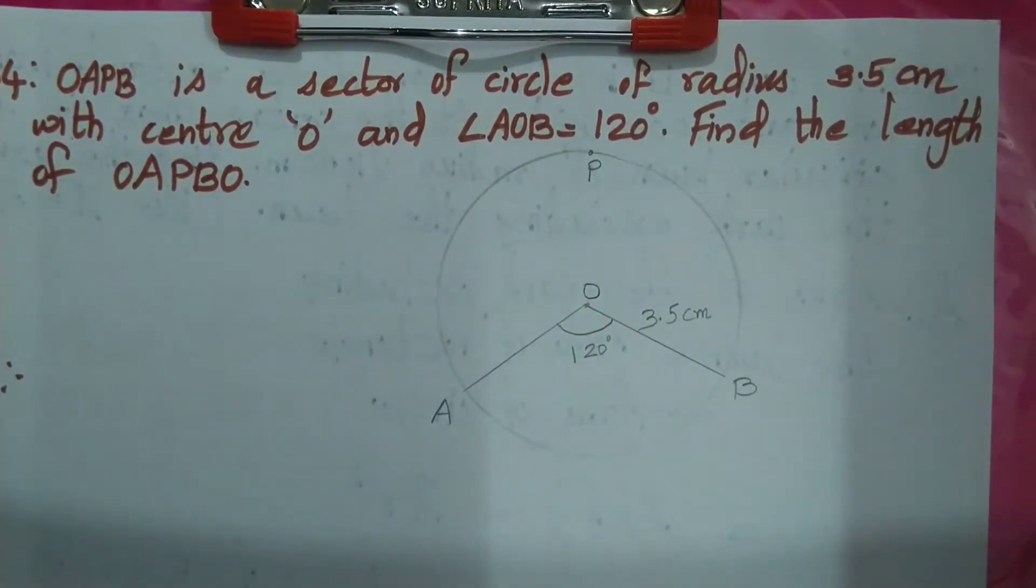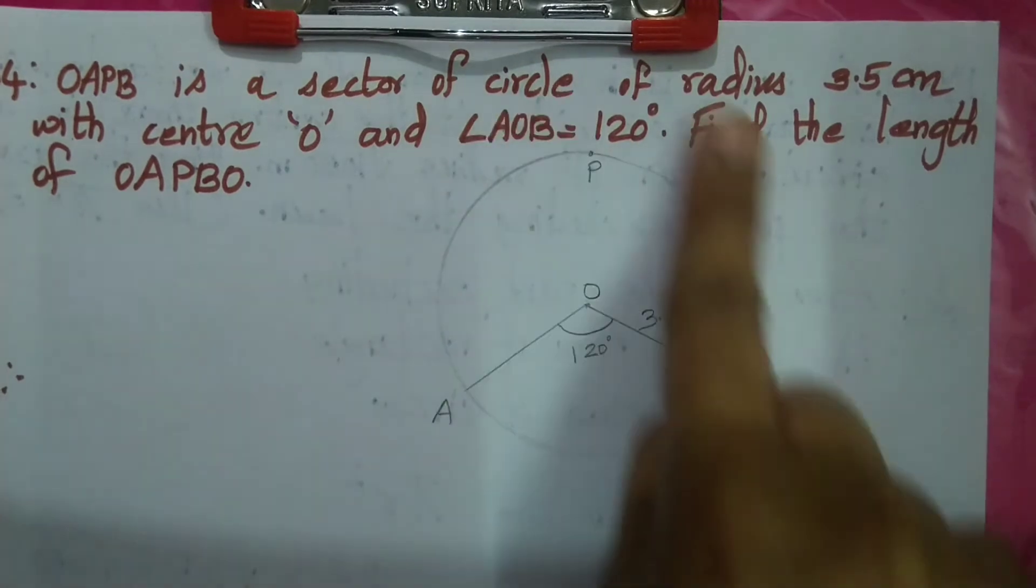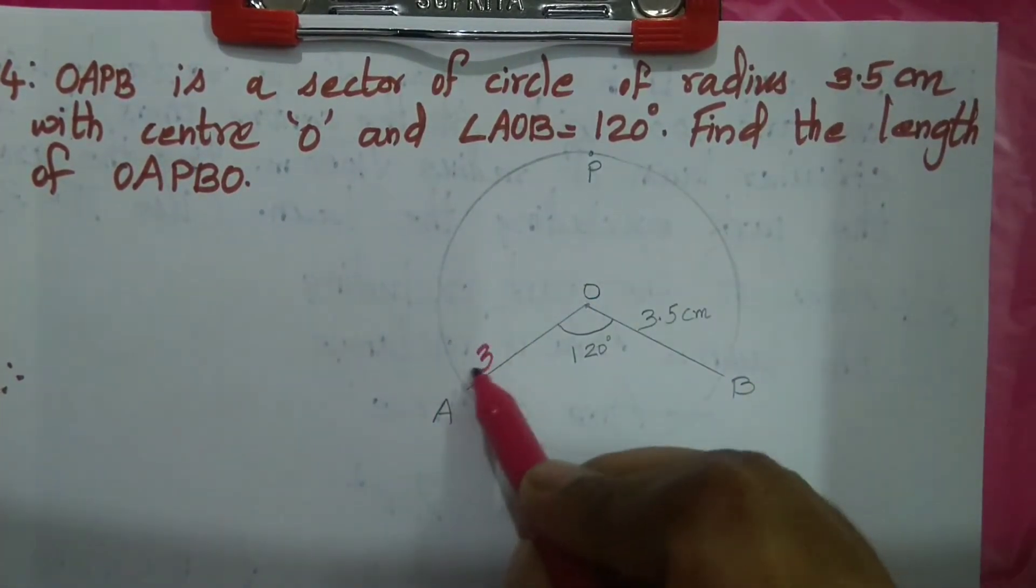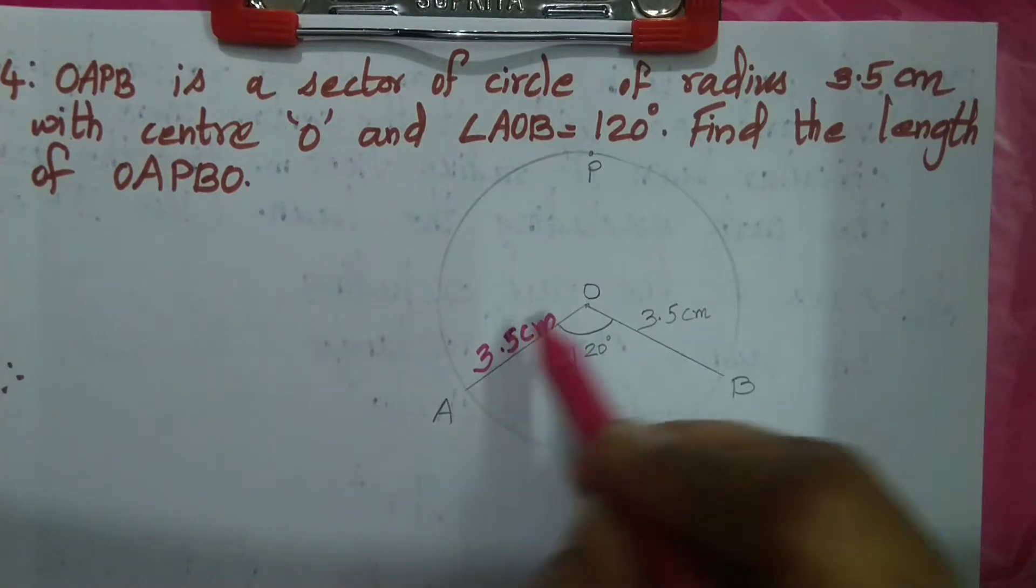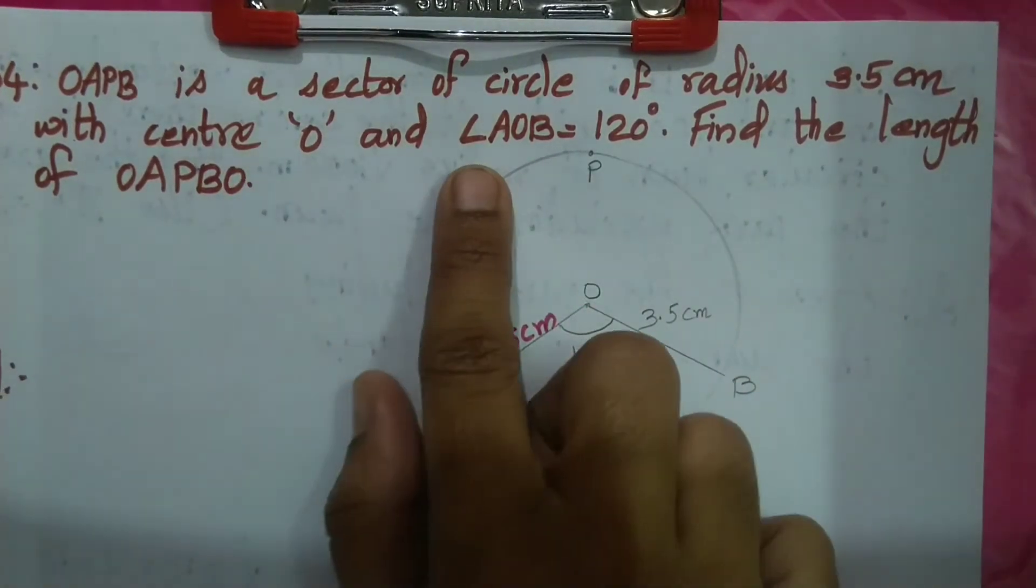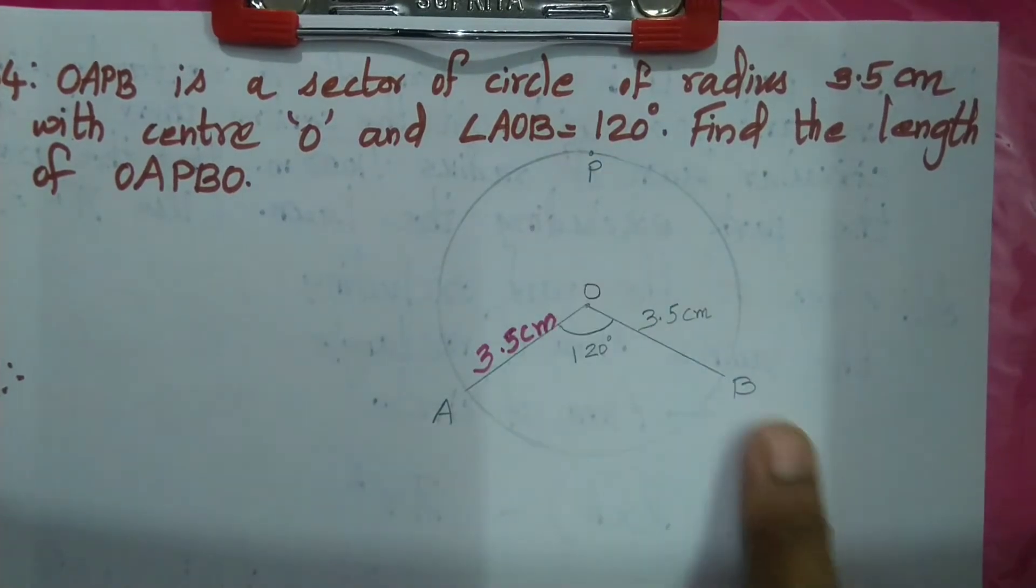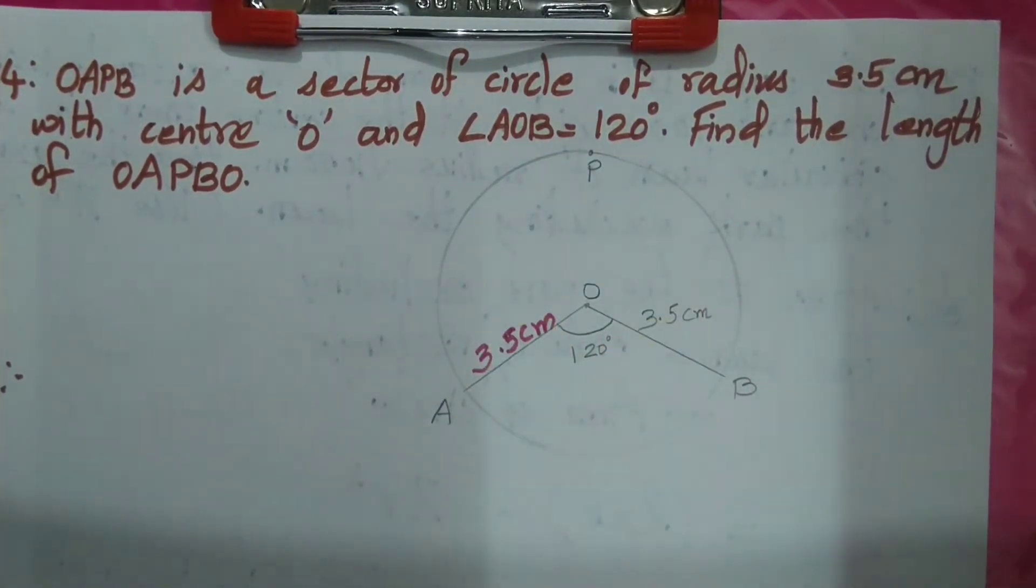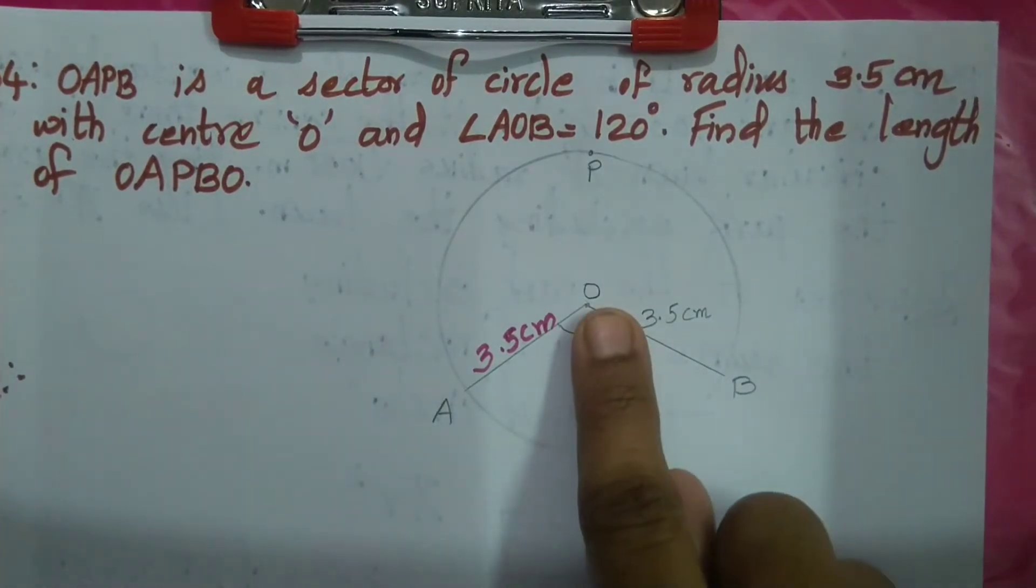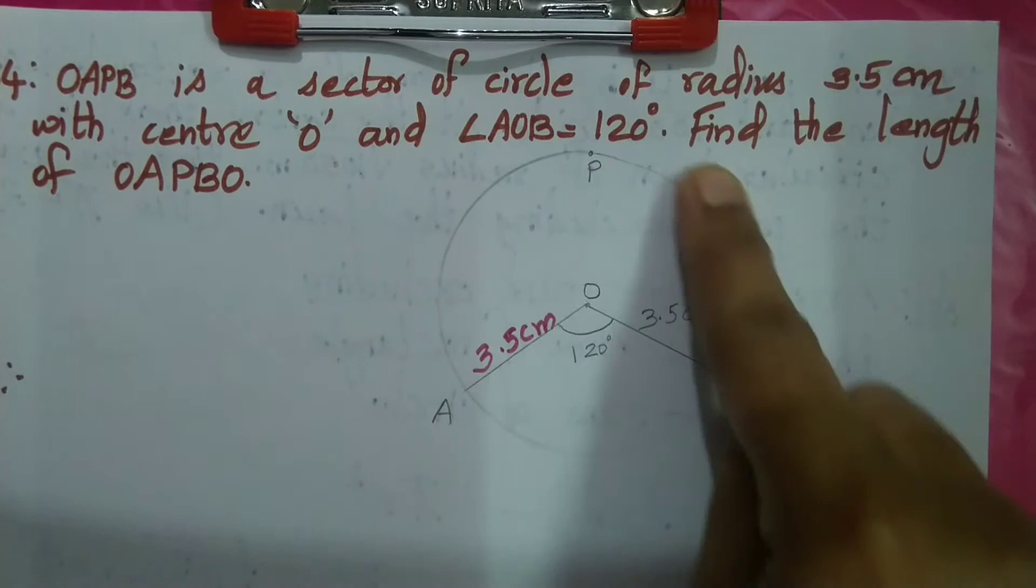I am specific to this because sector is a minor sector. Let's look at this major sector whose radius is 3.5. OA 3.5, OB 3.5. Radius is a sector with center O and angle AOB equal to 120. This angle AOB, this final sector is 120. Find the length of OAPBO.